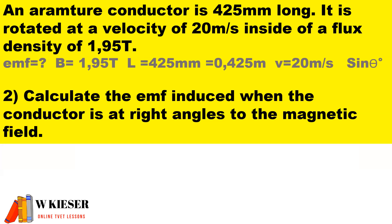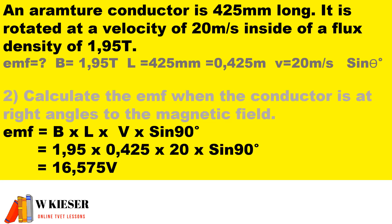Number two: calculate the EMF induced when the conductor is at right angles to the magnetic field. At right angles, maximum EMF is induced — that is at 90 degrees. So we substitute 90 degrees into sine theta. Therefore the EMF at 90 degrees is 16.575 volts.